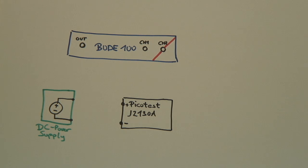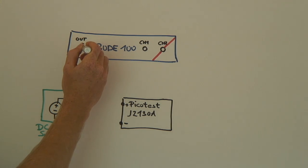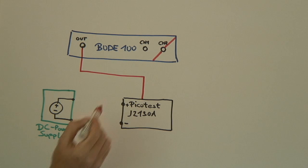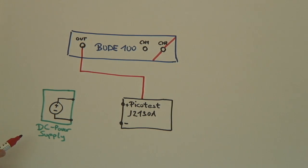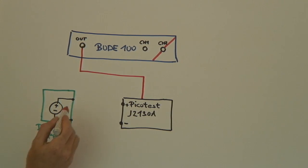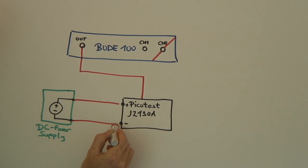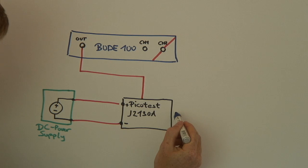The setup is very simple. You connect the output of the Bode 100 to the bias injector. The DC voltage is supplied by a DC power supply and directly connected to the DC bias injector. Our device under test is then connected to the output of the bias injector.